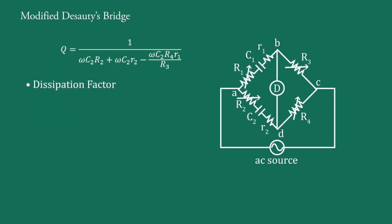The dissipation factor equals ωC1R1, which is the inverse of Q. Therefore, Df equal to ωC2R2 + ωC2·r2 − ωC2·R4·r1/R3.